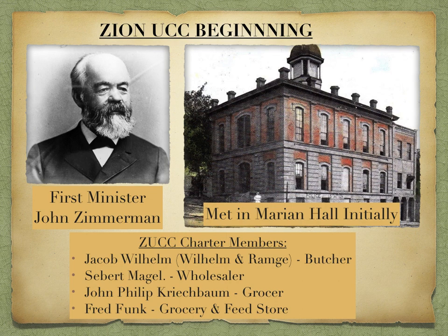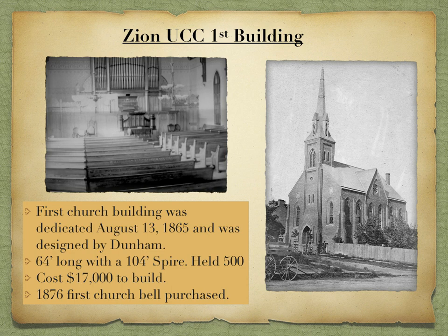Zimmerman left in December 1889 in order to give full time to his office as president of the Evangelical Senate of North America. Zion's first church building was dedicated on August 13, 1865, and was described in the Burlington Hawkeye as one of the most beautiful church edifices of Burlington's Gothic architecture. It was 64 feet in length, with a spire of 104 feet high, a seating capacity of 500, and the original church cost $17,000.